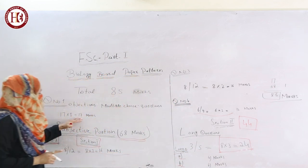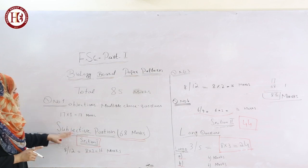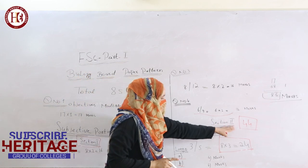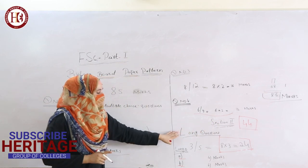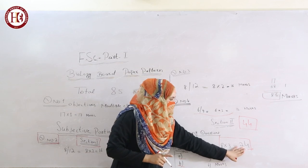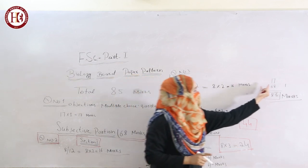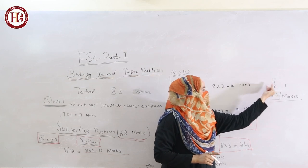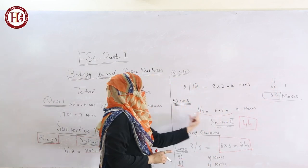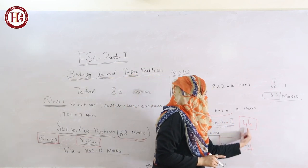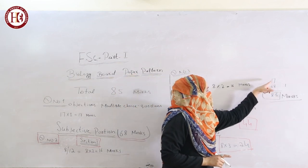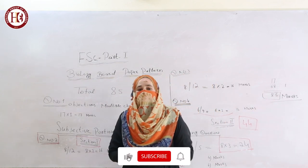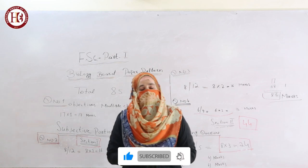To summarize: Question No. 1 is 17 marks. Subjective Portion Section No. 1 has a total of 44 marks. Section No. 2 long questions consist of 24 marks. Collectively, 24 and 44 marks give 68 marks for the Subjective Portion. 17 plus 68 equals a total of 85 marks.